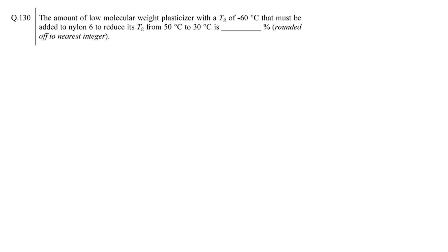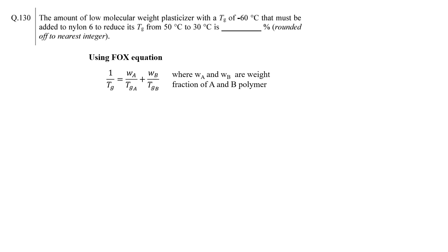This is a very common question in GATE. Here we need to calculate the amount of plasticizer required to reduce the glass transition temperature of a nylon sample from 50°C to 30°C. To solve this question, we need to use the Fox equation, which is shown here. Since the glass transition temperature of the plasticizer and nylon's initial and final glass transition temperatures are given, we just need to put these values into the equation to calculate the weight fraction of plasticizer.